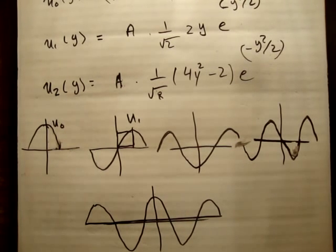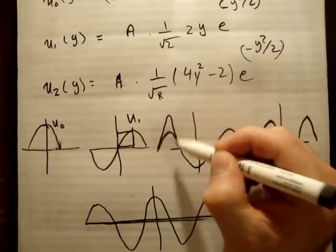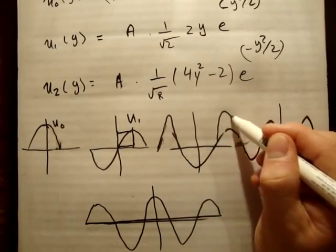Now I know I haven't represented it properly in my drawings yet, but the outer troughs or the outer peaks are actually higher. So these ones should be like this. In fact, these ones should be like this.